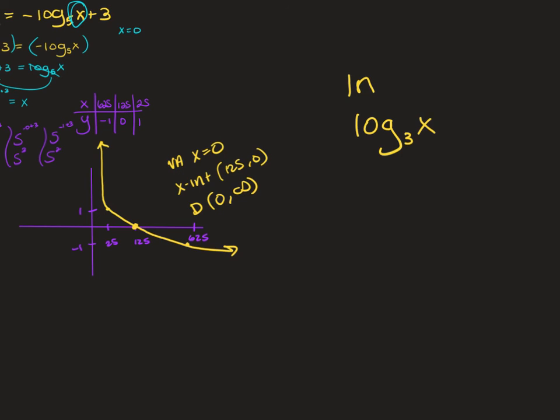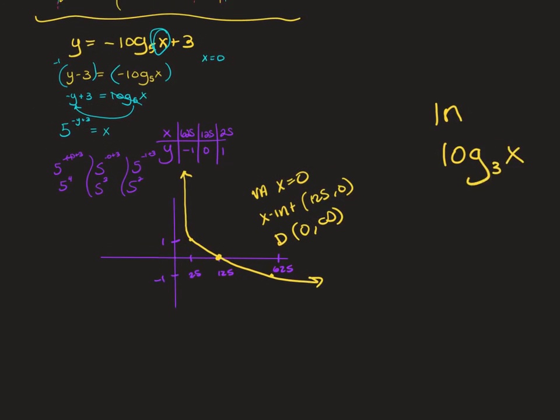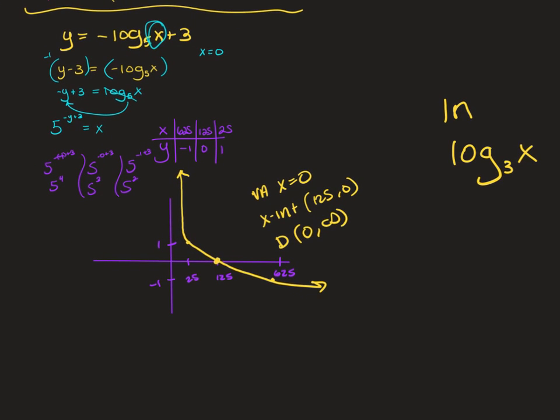On the quiz, there is no calculator. So no big numbers will appear. To confirm: negative negative 1 plus 3 is positive 1 plus 3, giving 5 to the 4th equals 625 for the positive case. For the quiz, just remember: logs have vertical asymptotes and x-intercepts; exponentials have horizontal asymptotes and y-intercepts. No calculator means we approximate e as 3.